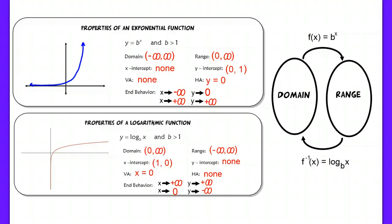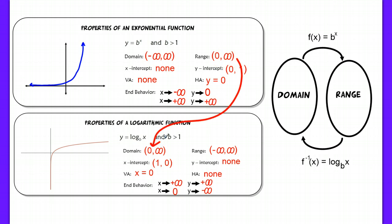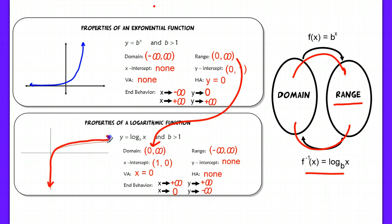Just to review: the basic concept for an exponential function and its inverse logarithmic function — I want to talk about domain and range. The exponential function has a domain of all reals, and your range is only positives, which means the logarithmic function, whose range now becomes its domain. All the range values become the inputs for the inverse function. Your outputs are all reals, but your inputs must be positive for a log function.